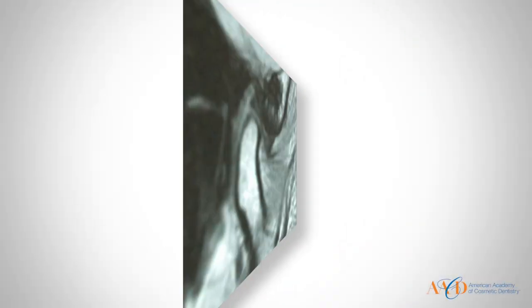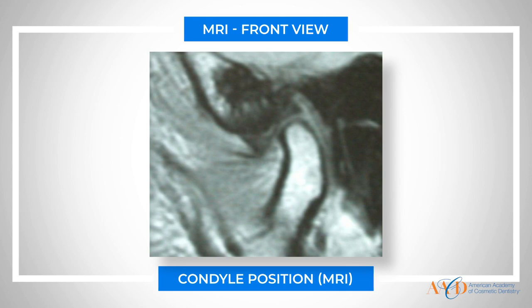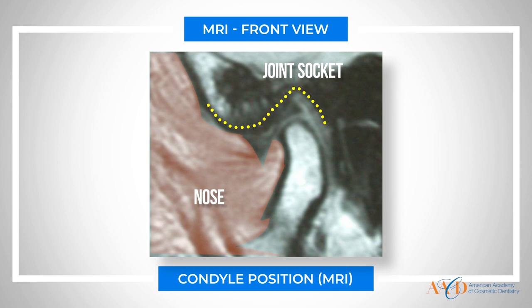Let's start by taking a look at some imaging. We're going to start out by talking about the disc, and we'll look at it on an MRI. Here's the MRI — that's an MRI of a normal joint. We've got an anterior-posterior orientation on the slide, so the nose is towards the left side of the screen. I'm going to outline the joint socket in yellow. Above that is going to be brain, and below that's going to be the TM joint section. I'm going to outline the condyle in red, and then if you look in between the yellow and the red, you see a bow-tie-shaped structure. We'll outline that in blue, and that's going to be the disc.